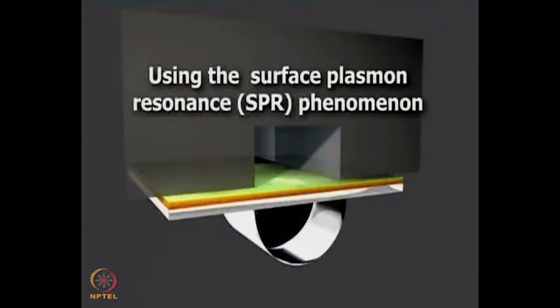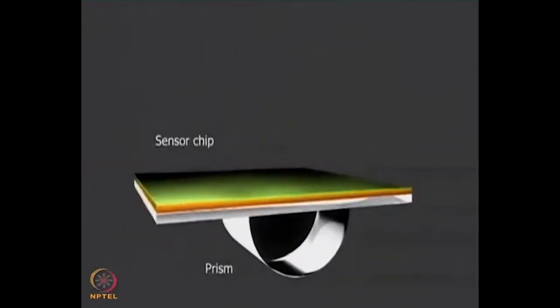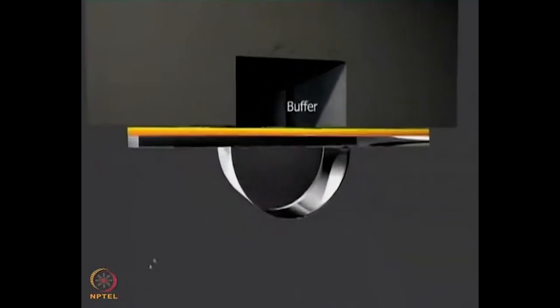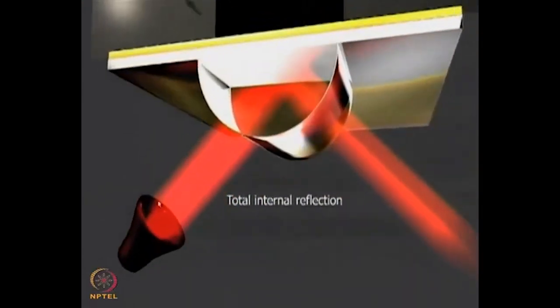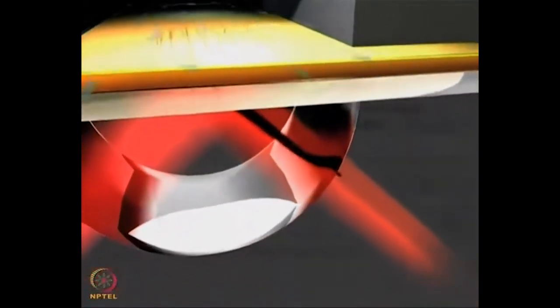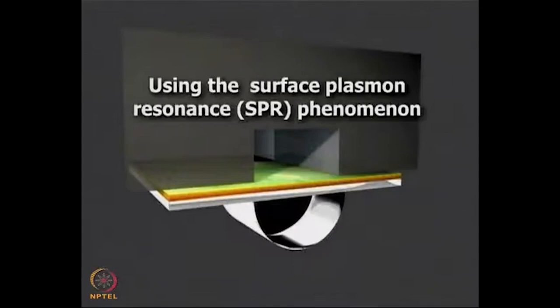What I show here is the basic SPR phenomenon. This is the SPR chip which you see here. On the top of the SPR chip is a gold layer, and on the top of it is a flow cell. At the bottom you see a hemispherical prism. When you actually have the prism and you shine a laser light through the prism, the light reflects at the angle of total internal reflection. Evanescent energy waves are created on the top of the chip, and these evanescent energy waves are also called surface plasmons. These surface plasmons are the ones which are used to actually study biological interactions.